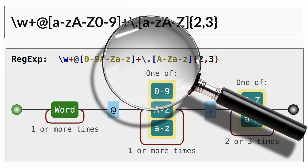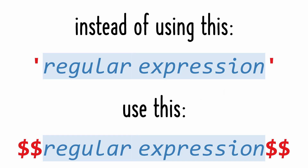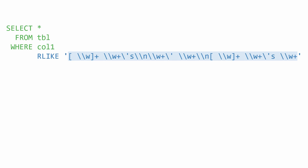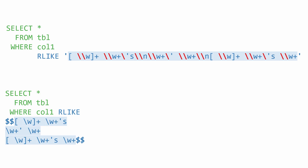Now we'll look at the important details of Snowflake's regular expression implementation. You can avoid escaping backslashes, single quotes, and newlines by putting your regular expression between pairs of dollar signs rather than between single quotes. For example, instead of using a regular expression which contains 21 backslashes, you can use an equivalent regular expression which only has 7 backslashes.